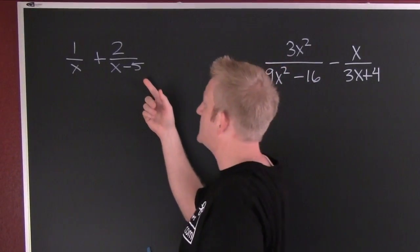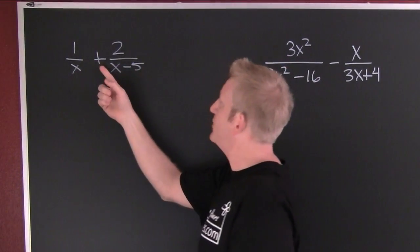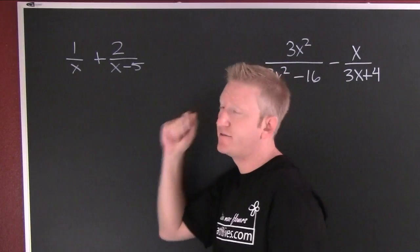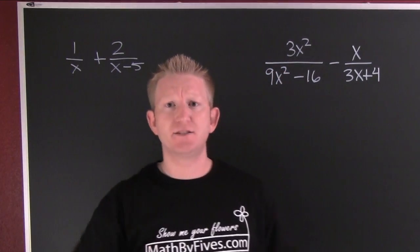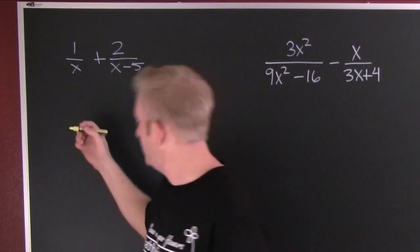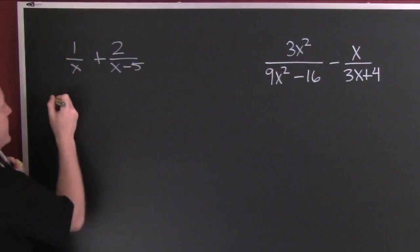I'm up here taking a look at this. It appears I have 1 over x plus 2 over x minus 5. Can I add those two the way they are? No, see what do I need? I need a common denominator.